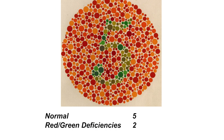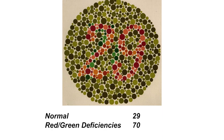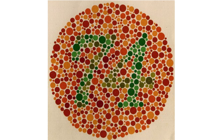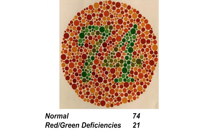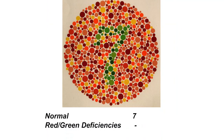The next number is 5, which is the normal answer — you may see a 2 if you have a deficiency. After that, 29 is correct; some may see a 70. Next is 74 — if you have a deficiency, you would see a 21. Then there's a 7 — if you have a deficiency, you may not see that number at all.